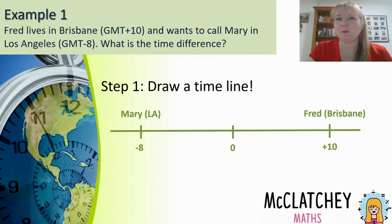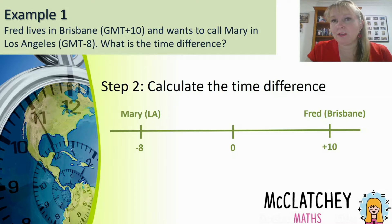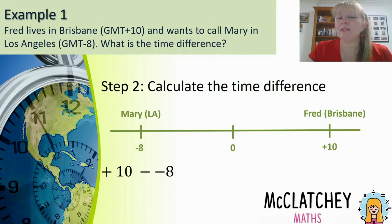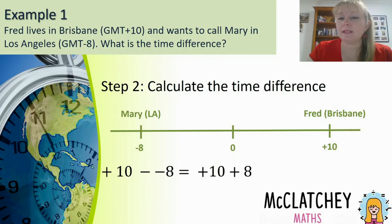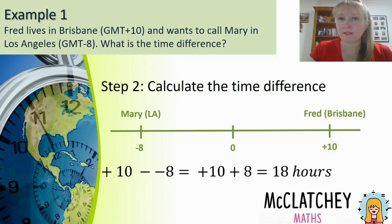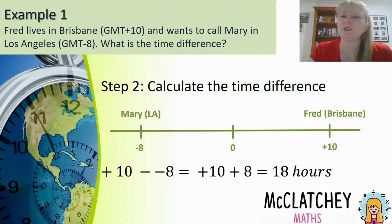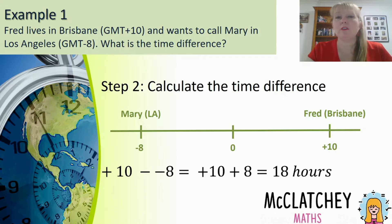It's important to also show the maths. I write down Fred's time, GMT plus 10. The word 'difference' implies subtraction, so I subtract Mary's minus 8. Now notice I've got a minus and a minus — that becomes plus 10 plus 8, which gives a time difference of 18 hours. That's why it's not 10 take away 8, but 10 subtract negative 8. I would always recommend using the timeline — it only takes a few seconds to draw, and I'll use that skill right across this video.